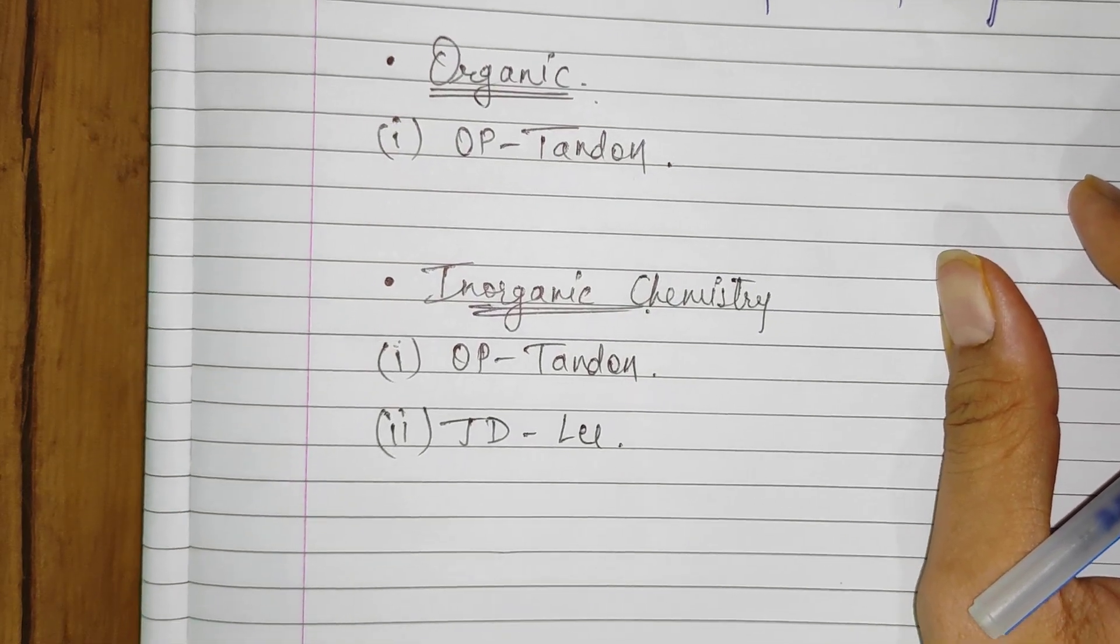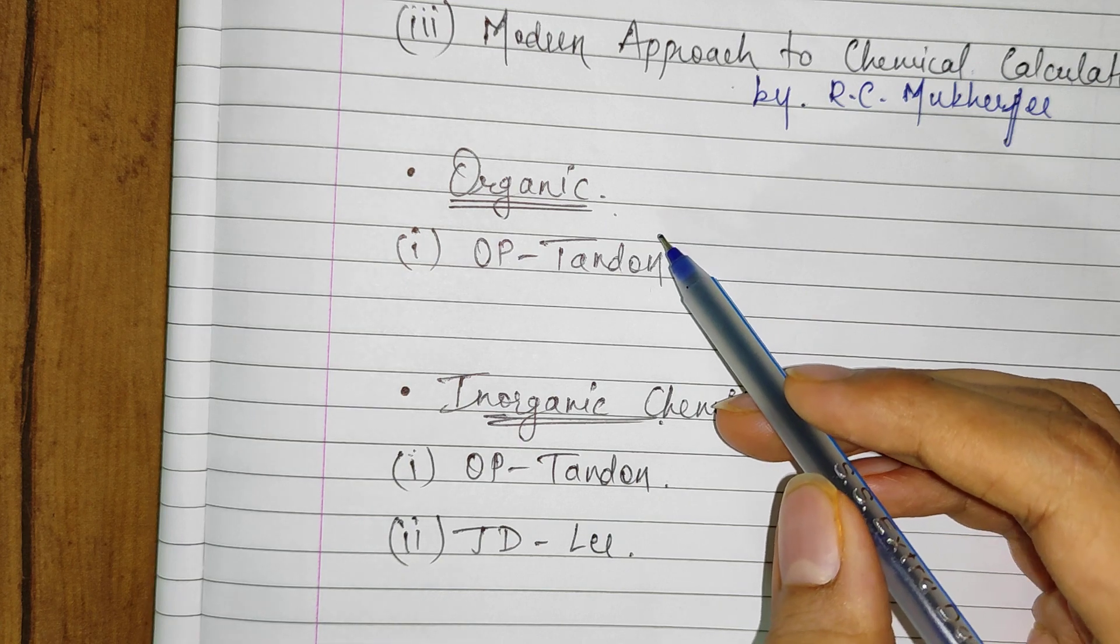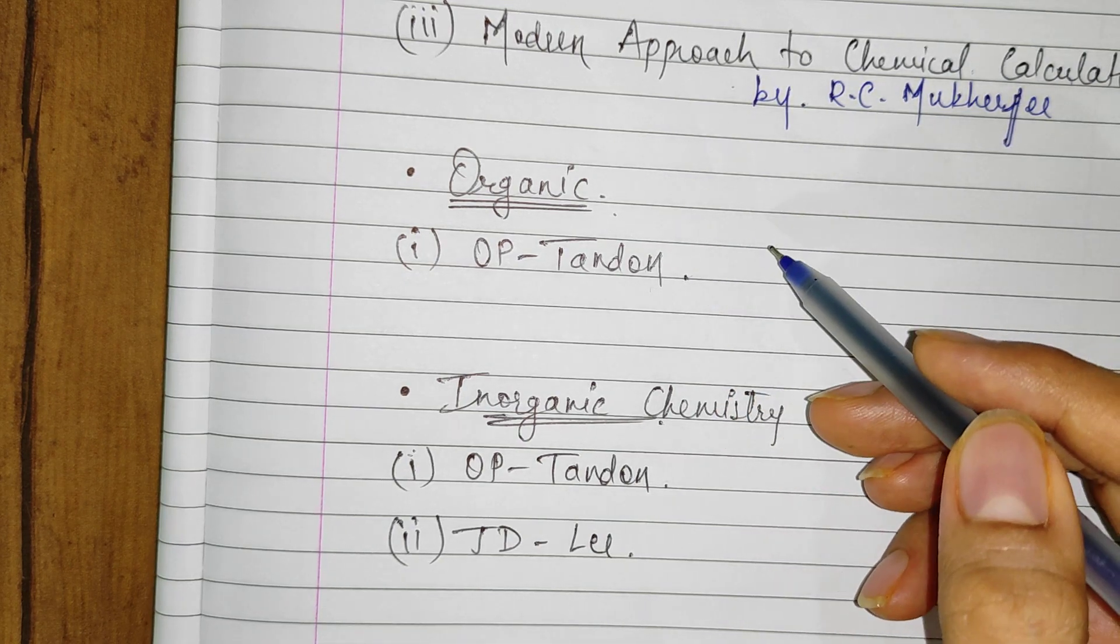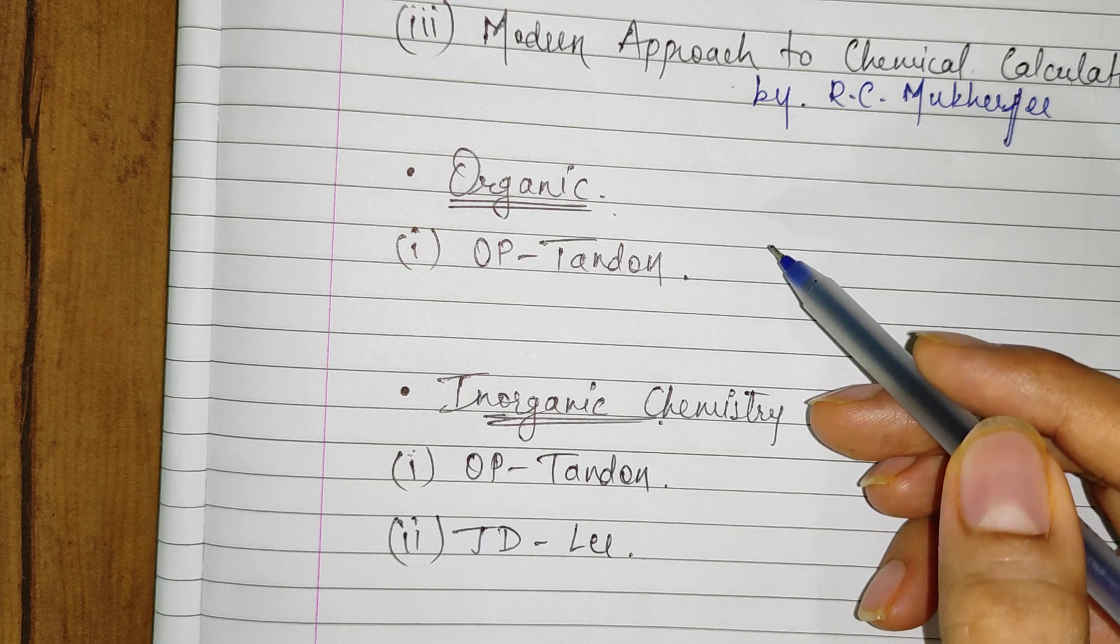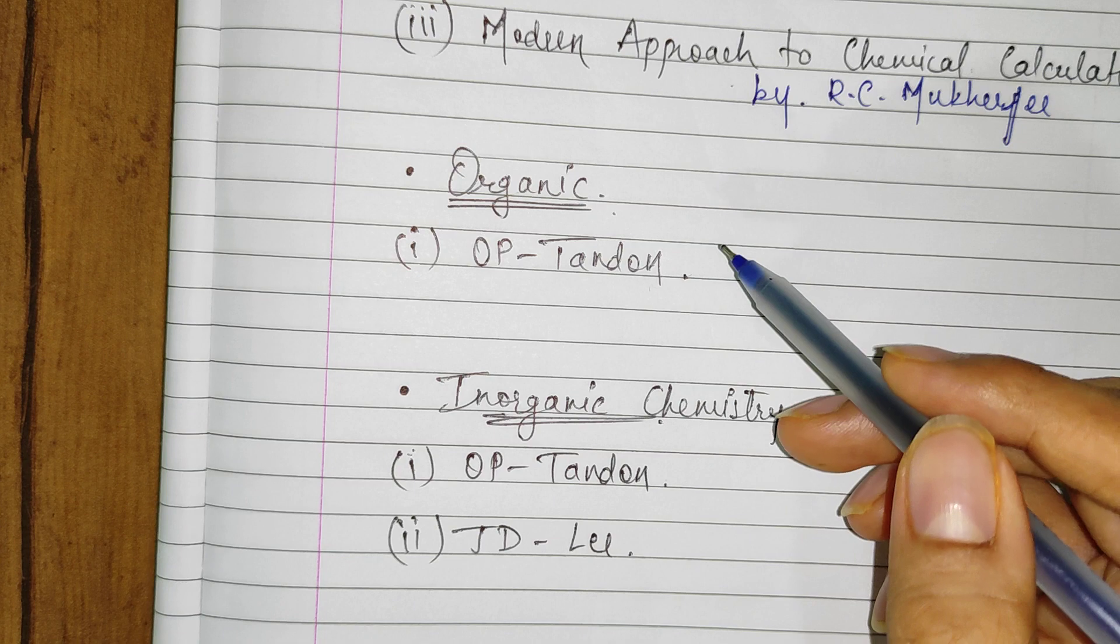Now for organic chemistry, I recommend OP Tandon because it explains all the equations in a very good way and also a list of all the important equations is given in the book. And there are many good quality questions for practicing.